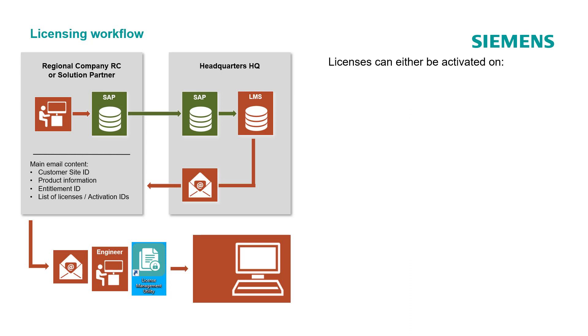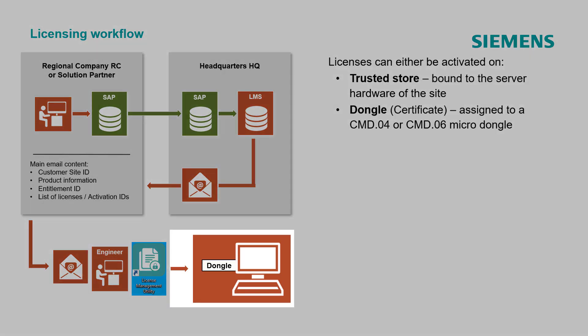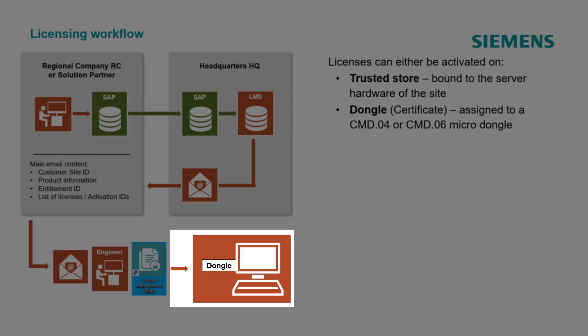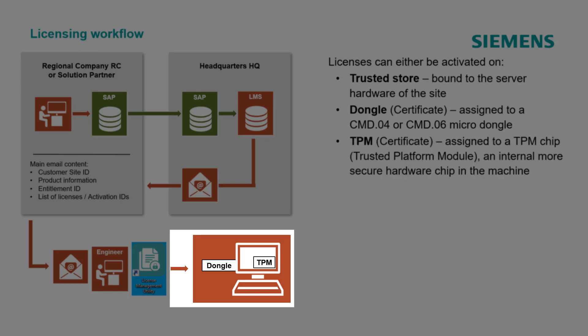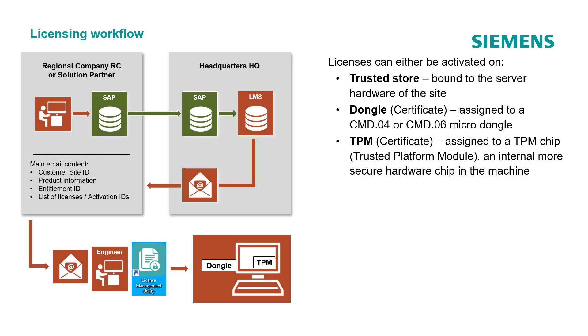The License Management Utility offers three types of license activation. First, Trusted Store, where the license is bound to server hardware components. Second, Certificate, where the license is assigned to a USB micro dongle (CMD04 or CMD06) using a certificate file. Third, also a Certificate option, where the license is assigned to an internal Trusted Platform Module (TPM) chip — a dedicated microcontroller designed to secure hardware through integrated cryptographic keys — instead of using an external USB dongle.